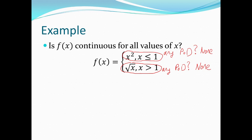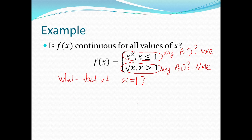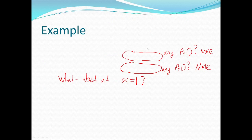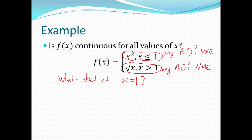Now, the function as a whole — is it continuous? We check what about at x equals 1. Is that continuous? Well, that's what we're going to check. I'm going to go back to my definition of continuity: the limit as x goes to a must exist and must be equal to f of a. In order for that limit to exist, the limit from the left side has to be the same as the limit from the right side. So in this case, our a is going to be 1.